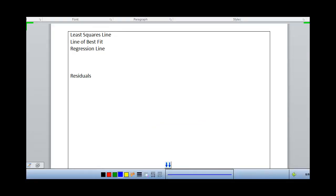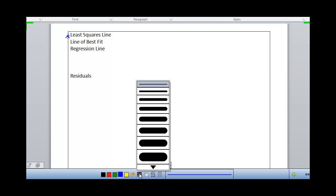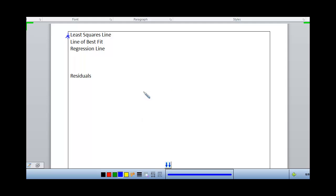All of these are names for this line that we find to model our linear data. I want to tell you why it is the line that models our data and maybe explain this name. Why is this line the best line for our data?